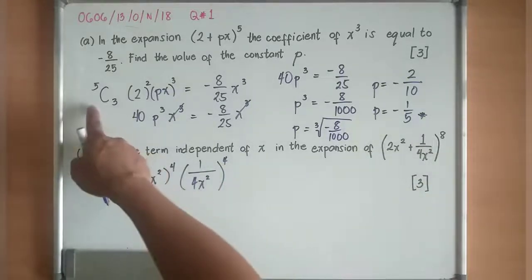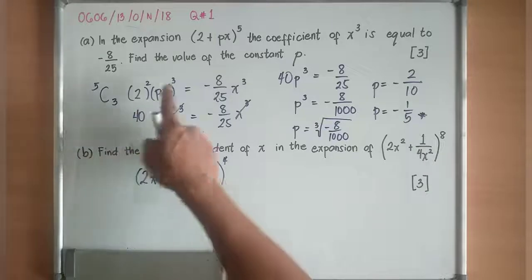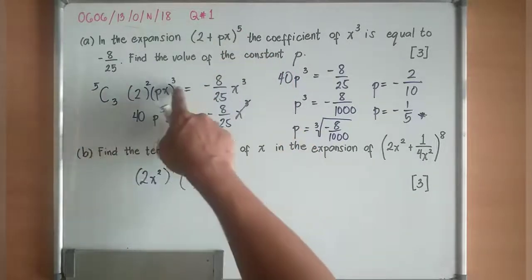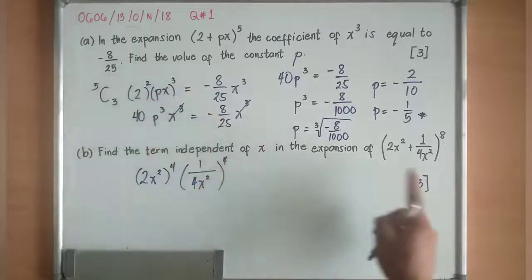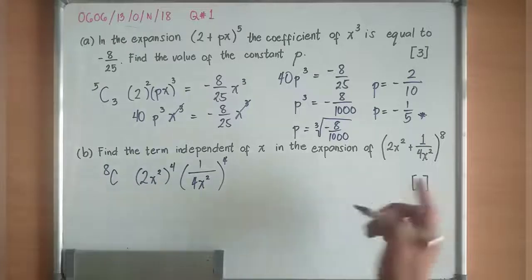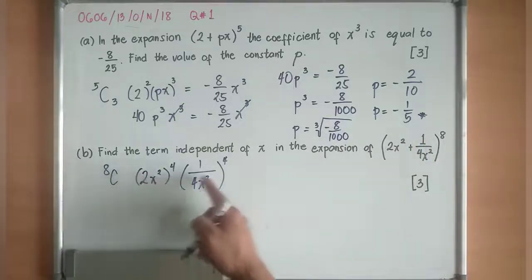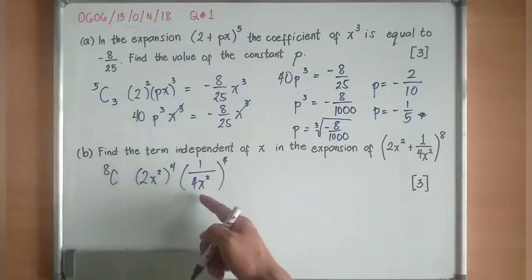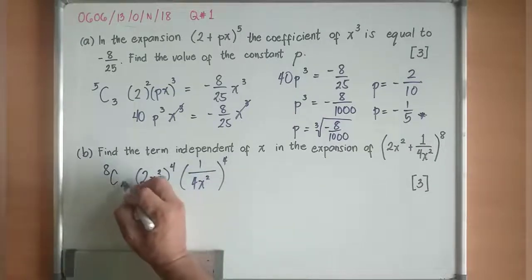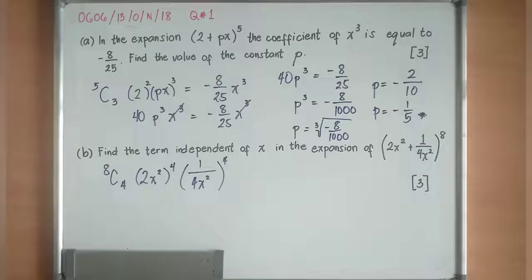Since you see earlier 5C3, I followed the index of the second expression, 5 then the 3. Here it is 8C, then followed by the index of the second expression, which is 1/4x^2, which is 4. So 8C4.